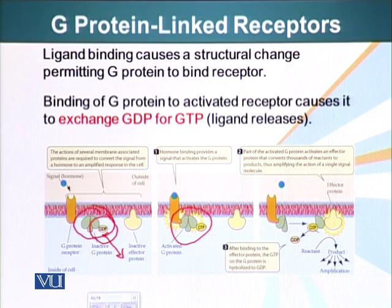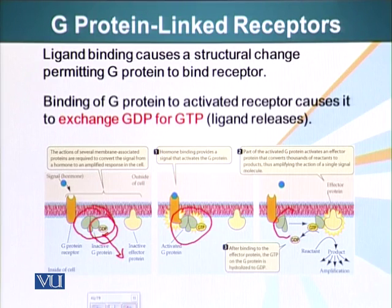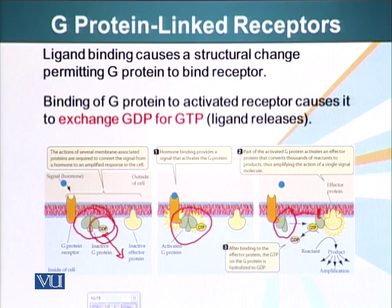Once the G-protein is activated, it splits into two parts. G-protein is made up of three different subunits: alpha, beta, and gamma. The alpha subunit dissociates, whereas beta and gamma stay together. The alpha subunit then moves to another part of the cell - still attached to the inner surface of the plasma membrane through a special hydrophobic molecule called a farnesyl group - and finds its effector protein, which transmits the effects of this ligand-receptor interaction to the rest of the cellular machinery.